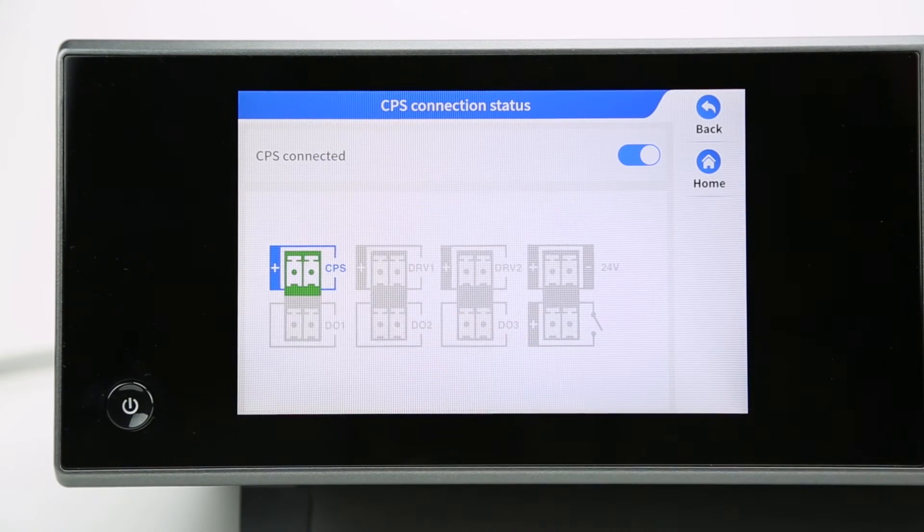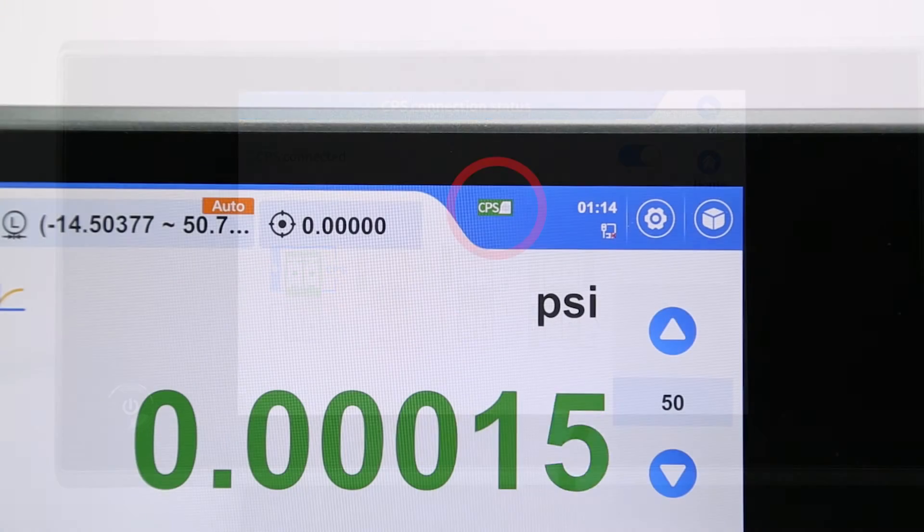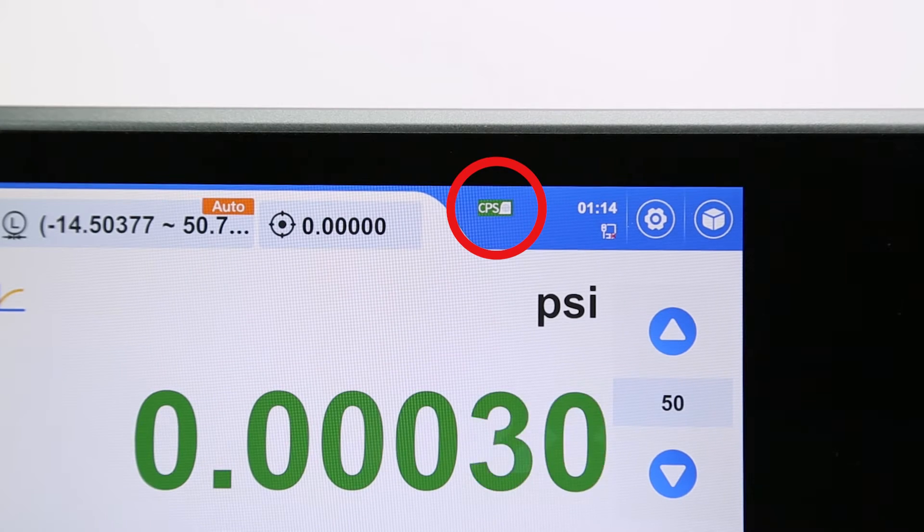Before testing, you can quickly check if the CPS is on by looking for this icon at the top right of the screen. And that's it!